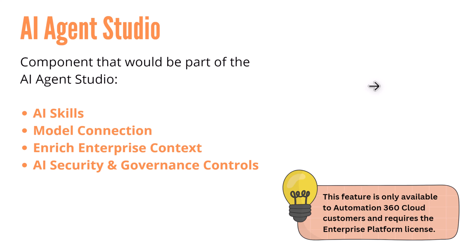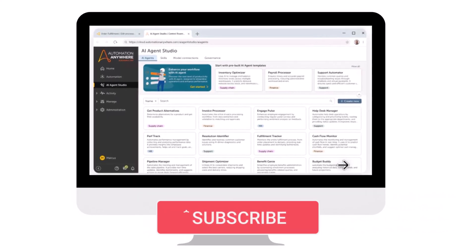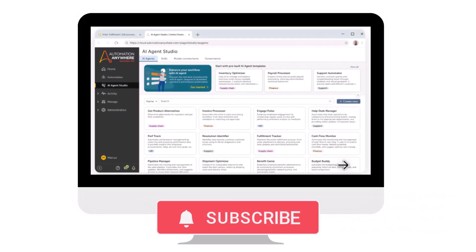The fourth component is AI security and governance control — it's all about governing your data: what models can be used, what criteria, compliance requirements, or regulatory requirements exist in order to use certain AI features. Importantly, this feature is only available to cloud customers at the moment, and it requires an enterprise platform license. This is how AI Agent Studio might look like in your control room.